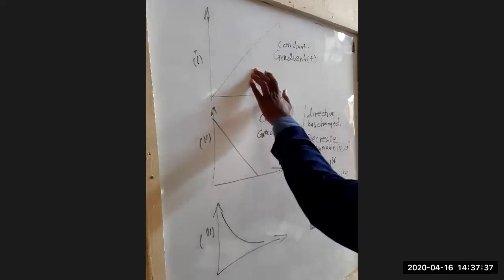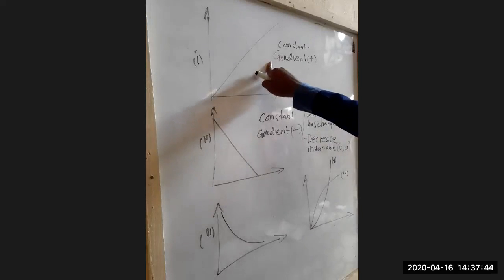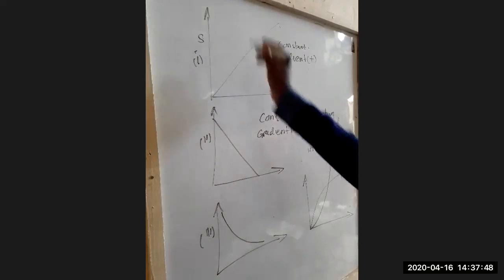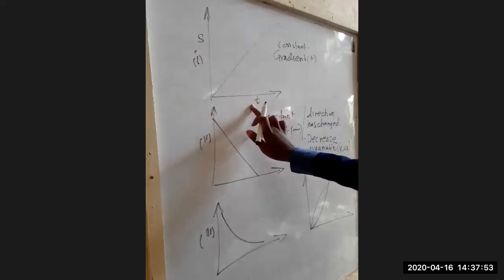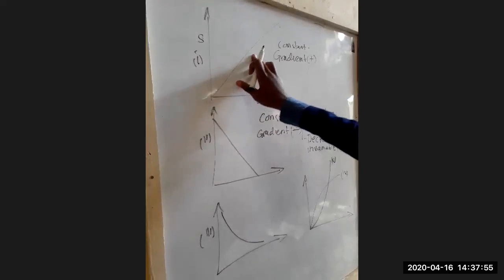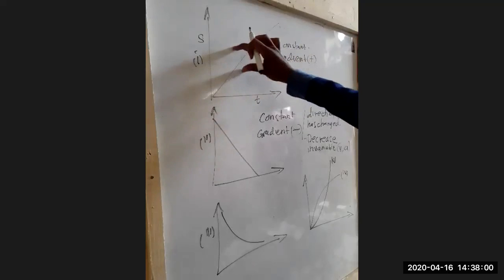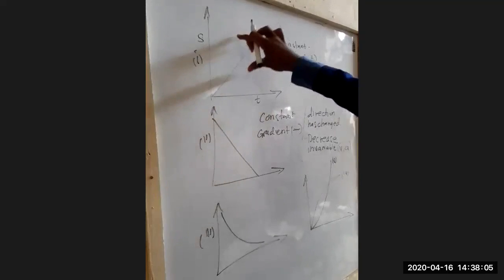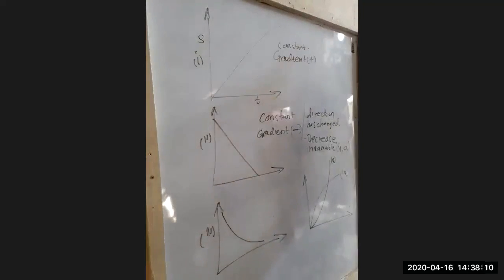The gradient is constant, so all you need to describe the motion is just look at the gradient. Assuming this graph shows displacement against time — if we find the gradient, that is change in displacement over change in time — that is going to give us velocity. Therefore if the gradient is constant and the gradient represents velocity, then the velocity for this motion is constant. So you describe this motion as: a body moves with a constant velocity.